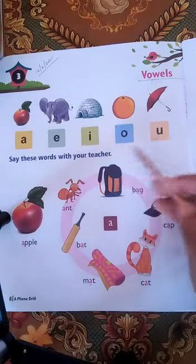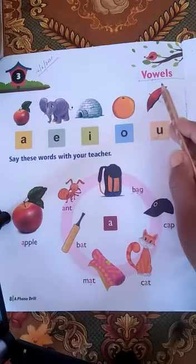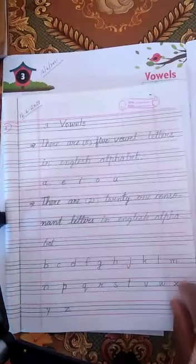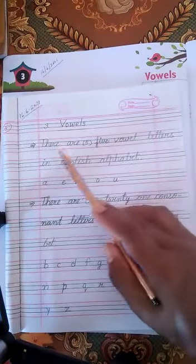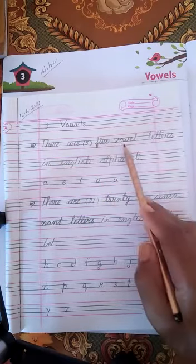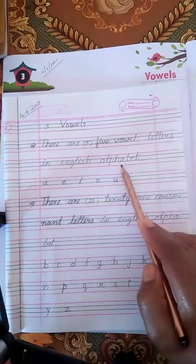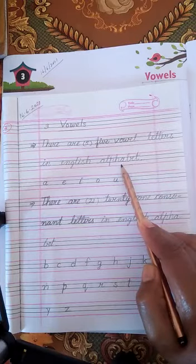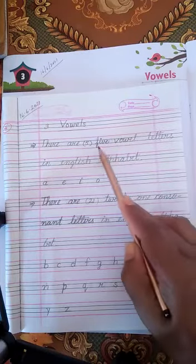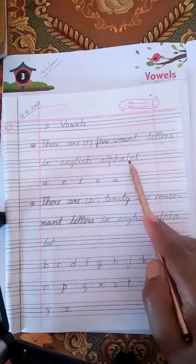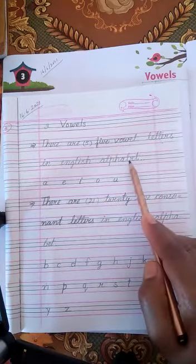These letters are called vowels. Here you will see there are five vowel letters in English alphabet. How many vowel letters are there? There are five vowel letters in English alphabet.